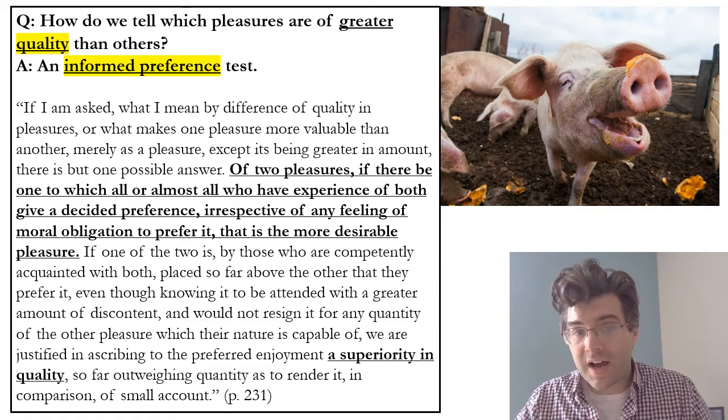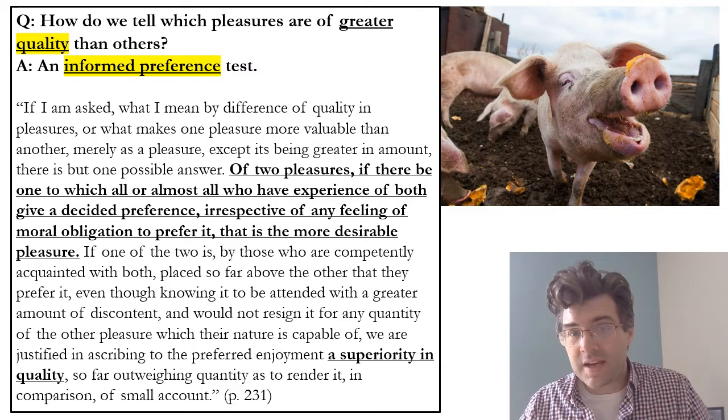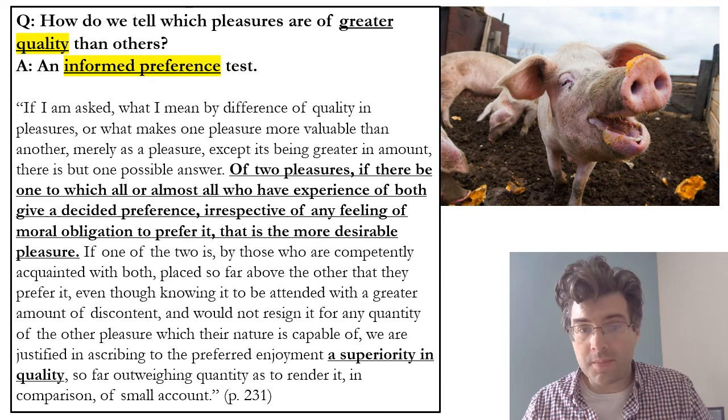So if that's our question — how do we tell which pleasures have greater quality than others — Mill gives an answer, which is an informed preference test. He describes this test as follows: if I am asked what I mean by difference of quality in pleasures, or what makes one pleasure more valuable than another, merely as a pleasure, except its being greater in amount, there is but one possible answer.